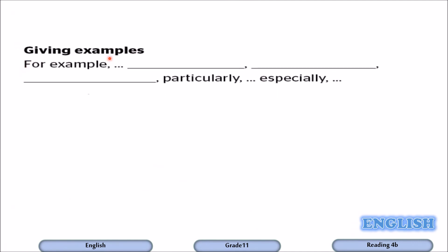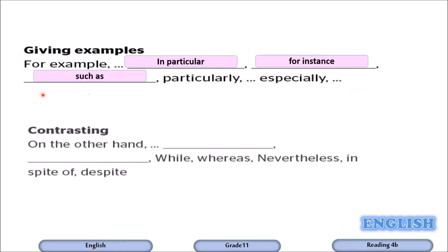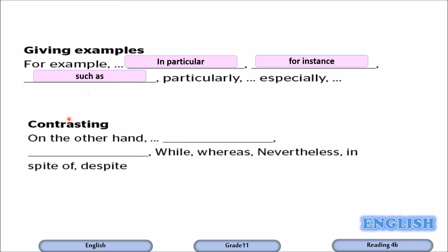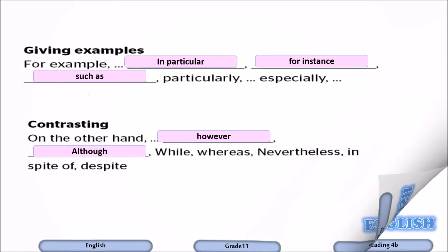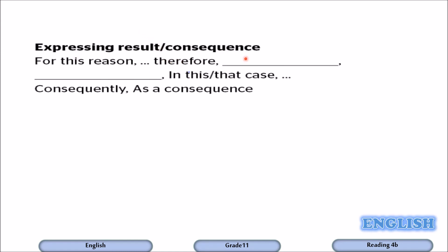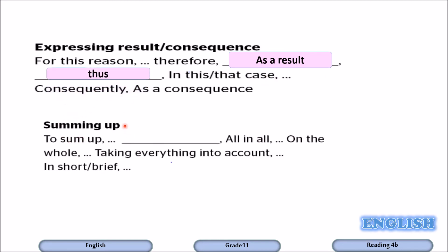For giving examples, the writer used in particular, for instance, and such as. For contrasting ideas — the opposite — he used however, on the other hand, and although. To express result or consequence, he used as a result and thus. And finally for summing up — the conclusion — he used in conclusion.